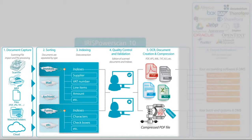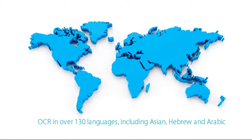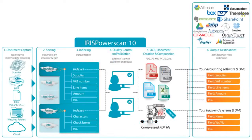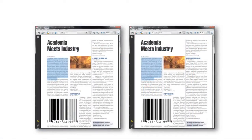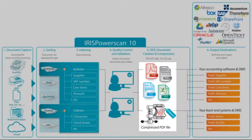OCR, document creation and compression. Iris PowerScan supports over 130 languages including Japanese, Chinese, Korean, Hebrew and Arabic. Images can be converted at high speed to fully searchable PDF, PDF/A, PDF compressed with Iris' renowned iHQC technology, XML, Word, Excel and many other formats.